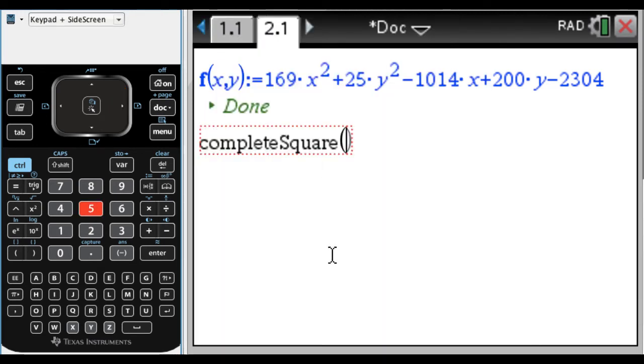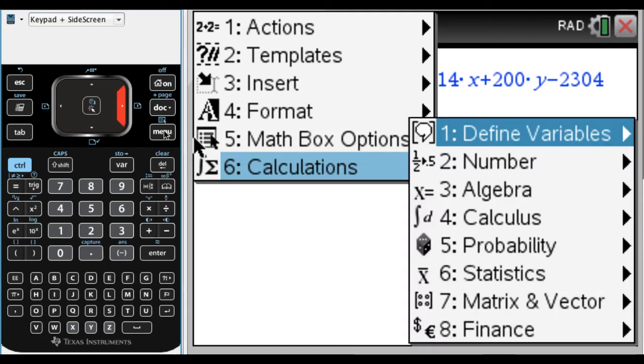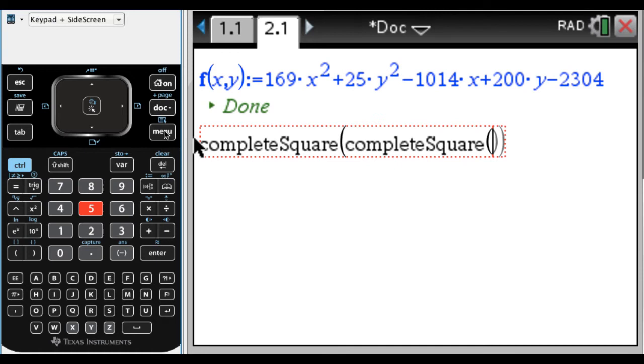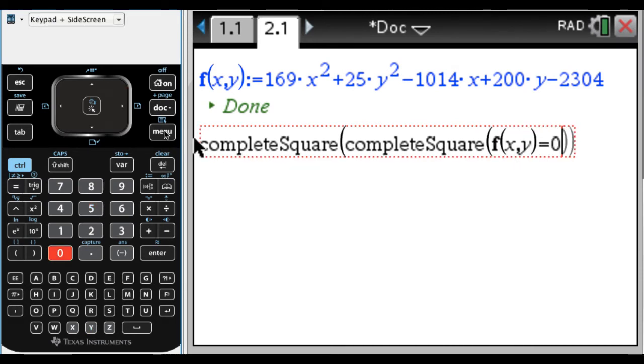I'm going to complete the square. Now think about what we did last time. We completed the square, we divided by the right-hand side, and then we completed the square again. So I'm going to complete the square—I need to complete the square again. So complete the square, menu 3, 5. So I want to complete the square on f(x,y) = 0, and I need to complete the square with respect to x and y. That'll complete the square, and I'll have that weird right-hand side. So it's going to be equal to some number, not 1.